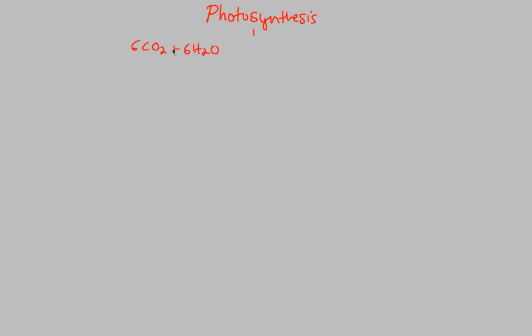This next flowchart will simply be entitled Photosynthesis, as an introduction to the steps we're going to look at. The reaction of photosynthesis is: 6 CO₂ molecules combining with 6 H₂O molecules, utilizing light energy, to yield C₆H₁₂O₆ plus 6 O₂. This is our overall chemical reaction that we want to focus on.